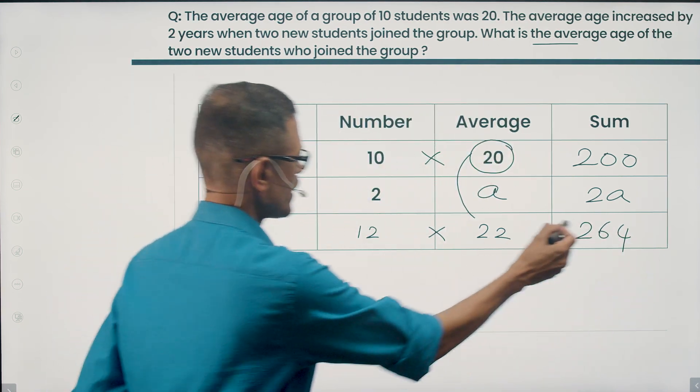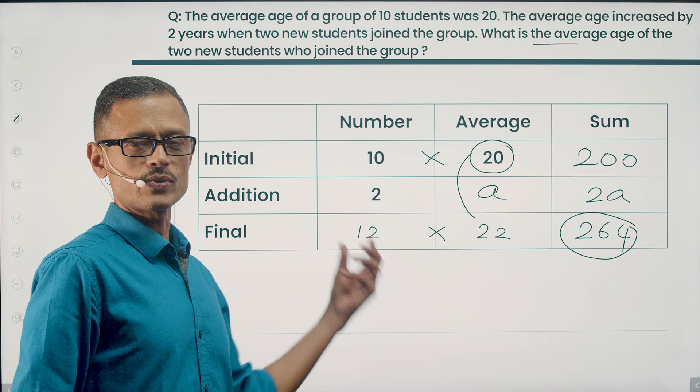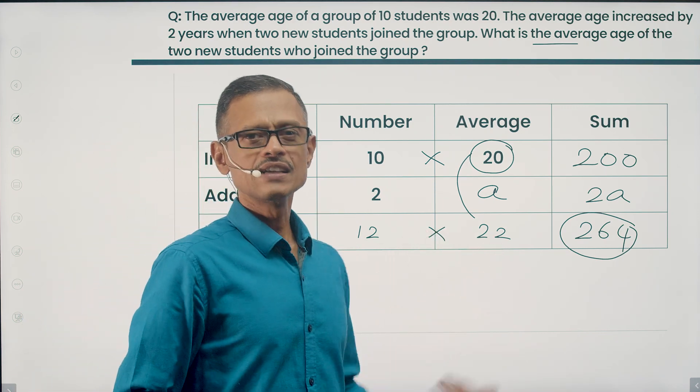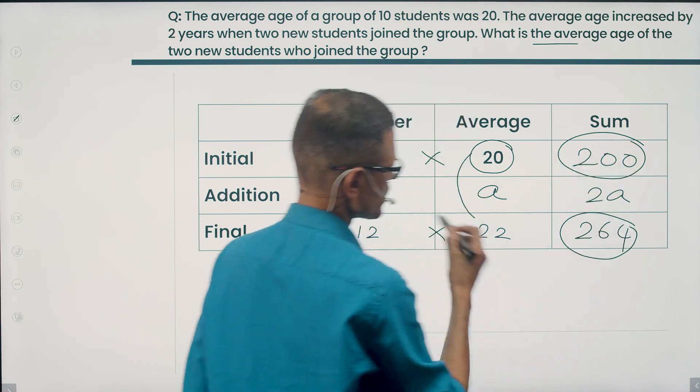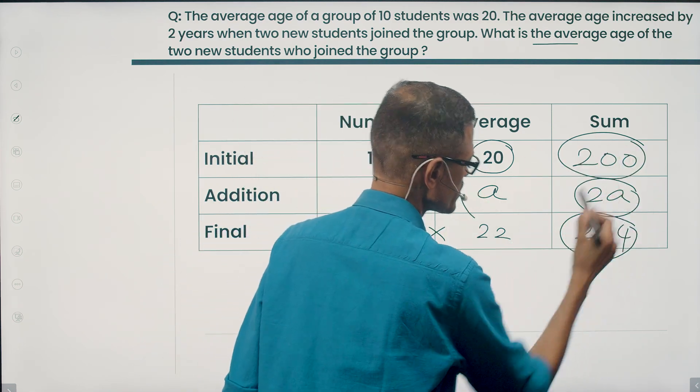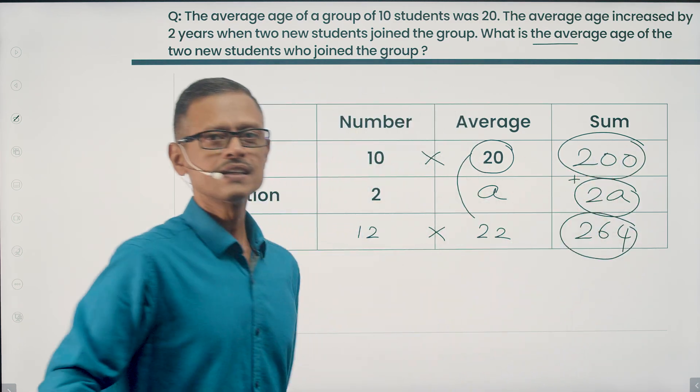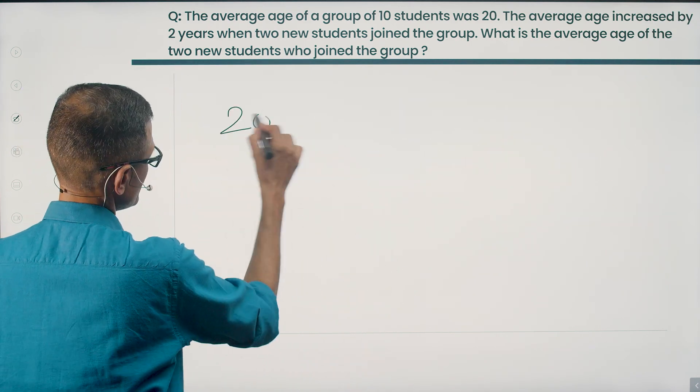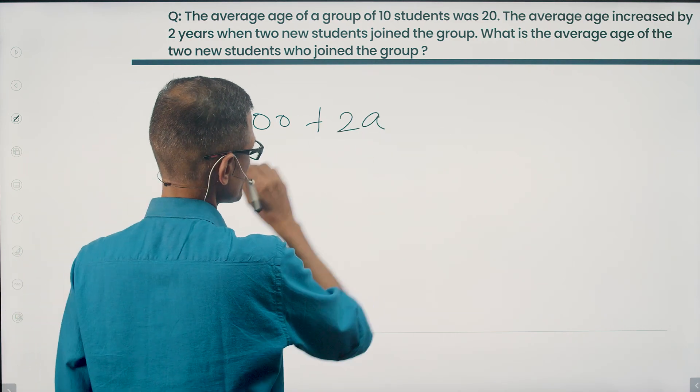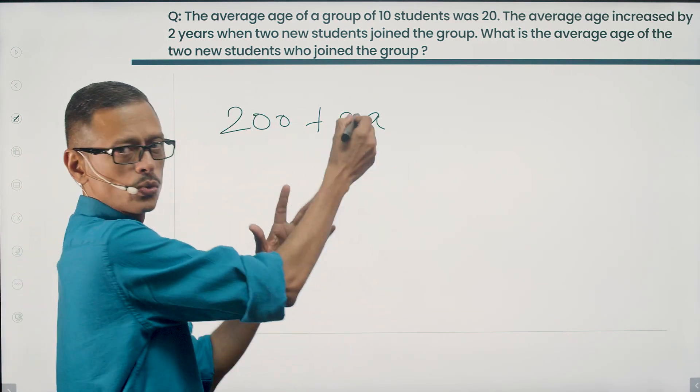Now this is one way to find out the sum of the ages of all 12 students. The number times the average. Another way of doing it is, I know the sum of the ages of 10 students in the group. I know the sum of the ages of 2 students in the group. So this is going to give me the sum of the ages of all 12 students.